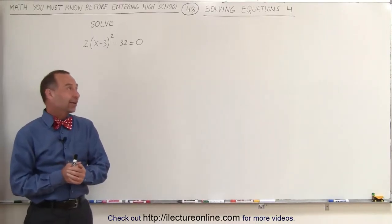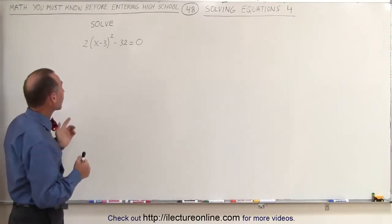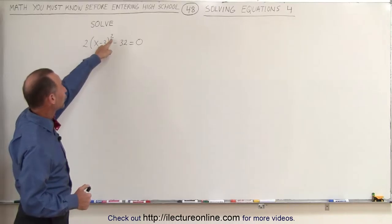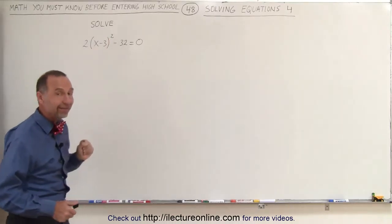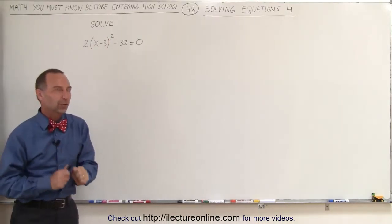Welcome to Electron Line. Our next example is a quadratic equation because we have a square term here. But notice there's also parentheses, which means we should get rid of those parentheses first.